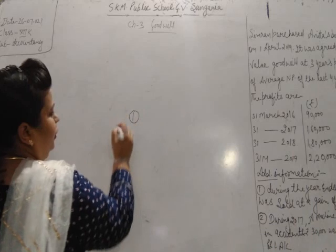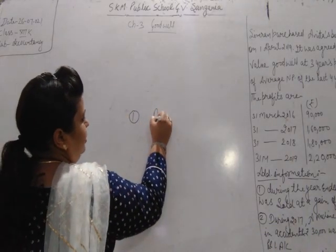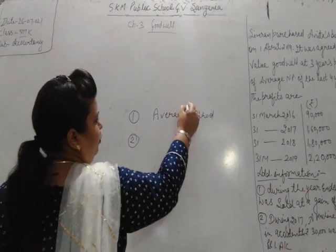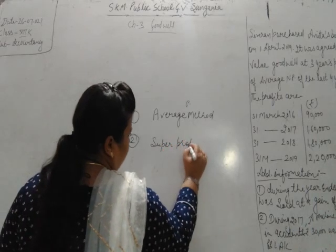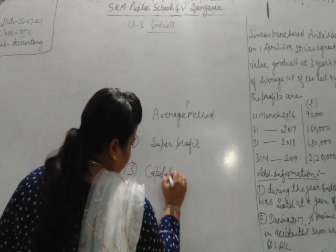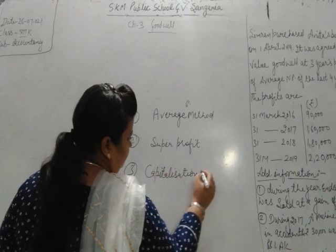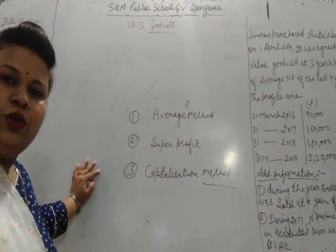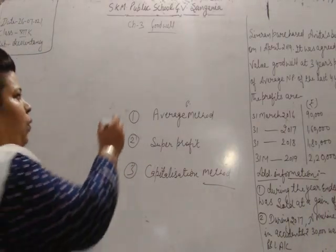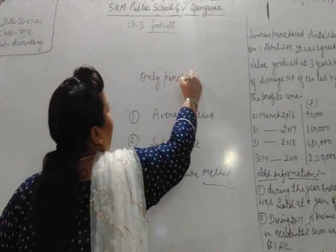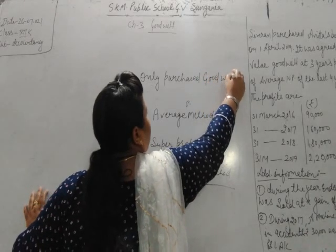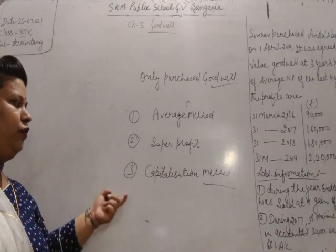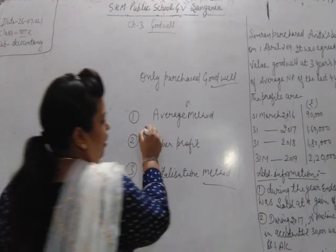Goodwill is valued by three methods. First is Average Profit Method, second is Super Profit Method, and third is Capitalization Method. Only purchased Goodwill will be valued, and it can be valued by these three methods: Average Profit Method, Super Profit Method, and Capitalization Method.